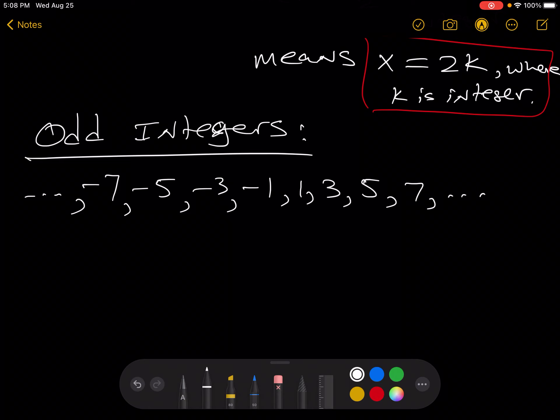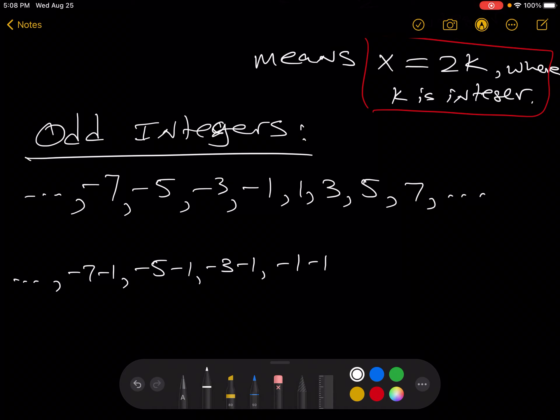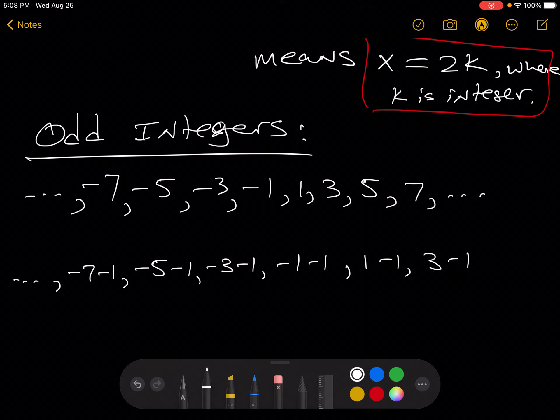Now, look what happens. If we subtract 1 from each of these, that would be negative 7 minus 1, negative 5 minus 1, negative 3 minus 1, negative 1 minus 1, 1 minus 1, 3 minus 1, 5 minus 1, and so on.